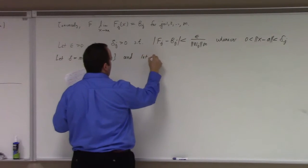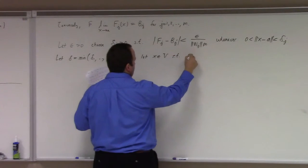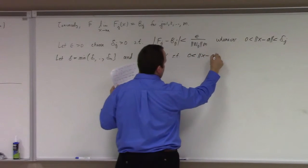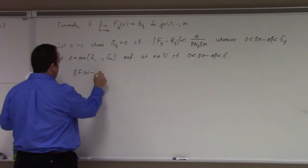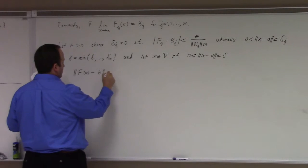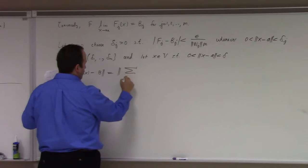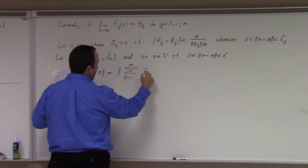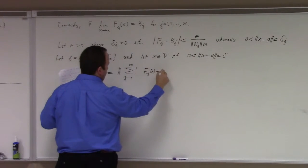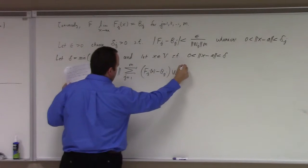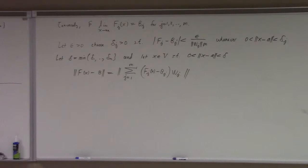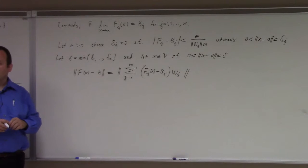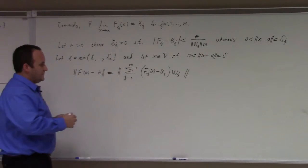And let x be an element of v such that 0 less than the norm of x minus a is less than delta. Then if I consider the norm of f of x minus b, right, well, that's equal to the norm of the sum j equals 1 to m of f sub j of x minus b sub j times wj because that's the basis expansion of the function, the mapping on this norm linear space.